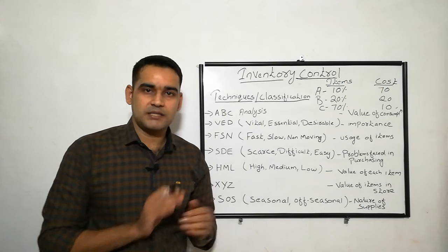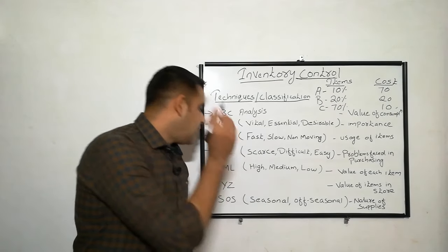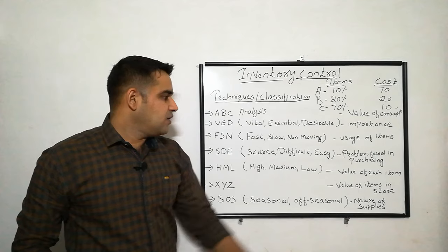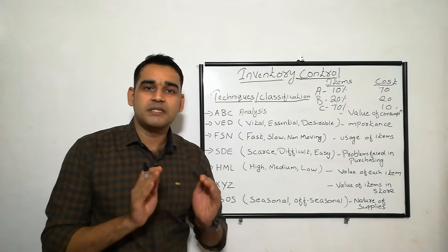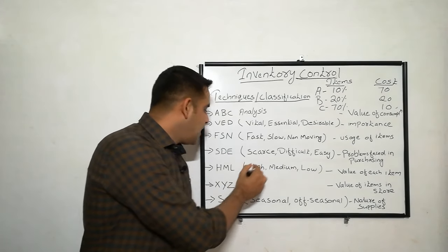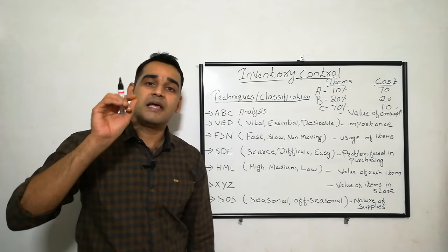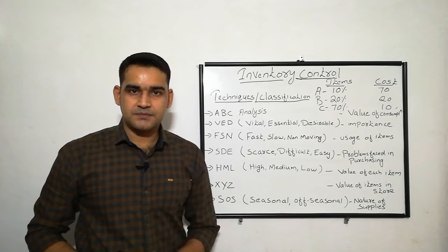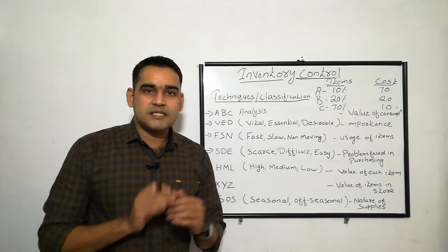Next is HML analysis — High cost, Medium cost, and Low cost. This is based on the value or unit price of each item — how much is the cost of each item. Items are classified as high cost, medium cost, or low cost according to their price. You categorize items based on their high price, medium price, or low price.